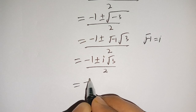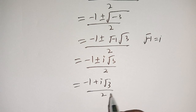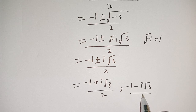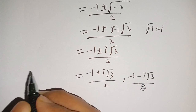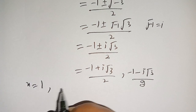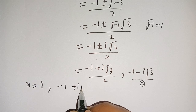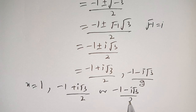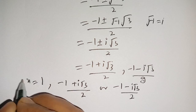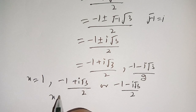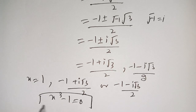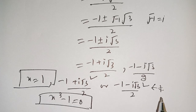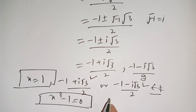There are two roots: the first is minus one plus iota square root of three, divided by two, and the second is minus one minus iota square root of three, divided by two. Thus, the three values of x satisfying x cubed minus one equals zero are: x equals one, x equals minus one plus iota root three over two, and x equals minus one minus iota root three over two. One root is real and the other two belong to the complex numbers.